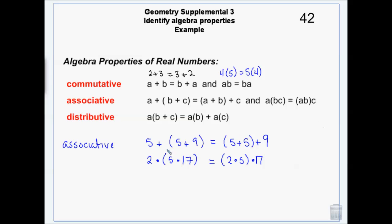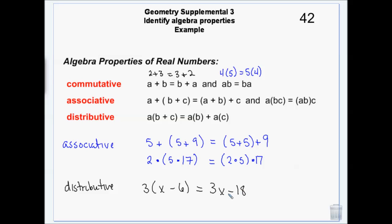The distributive property gets used a lot. If I have 3 times (x minus 6), that is the same thing as 3x minus 18 — I multiply in. Or if I go from 3x minus 18 and divide the 3 out, these are both called the distributive property either way. Even though we usually call the reverse direction factoring, it's still the distributive property.